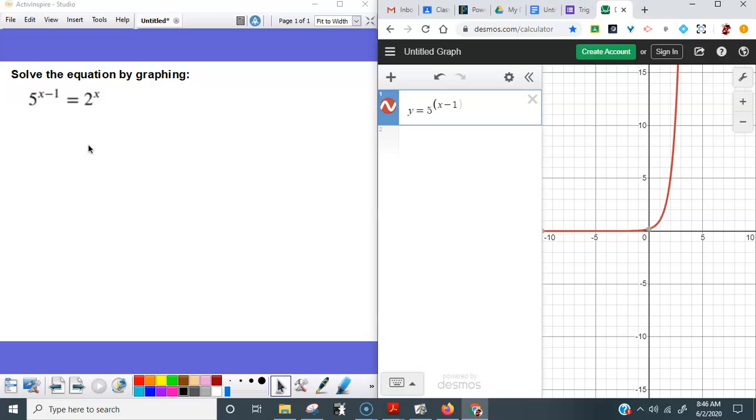So now I have the left-hand side of this equation graphed. If you're familiar with what exponential graphs look like, this shouldn't surprise you at all. We're growing more and more quickly as we move across that graph. I'm going to go down to my second input line here, and I'm actually going to graph the other side of this equation. So y equals two raised to the x power.